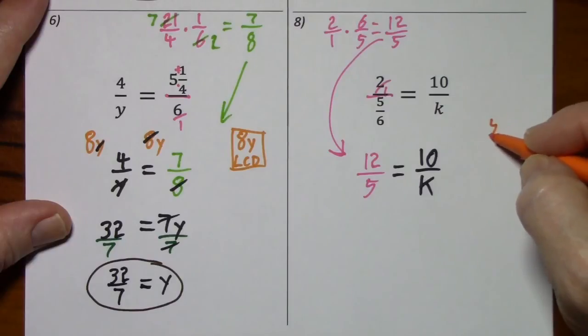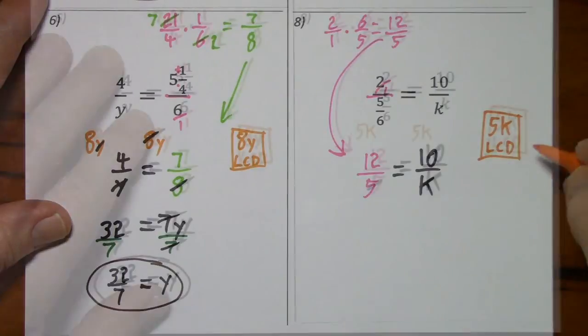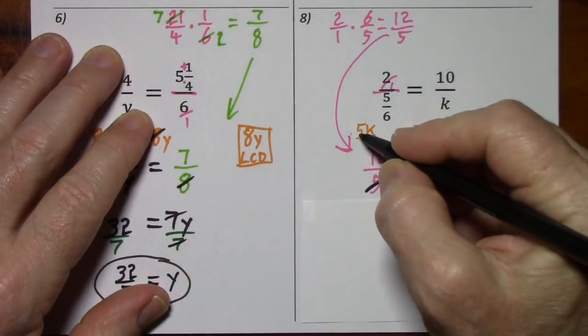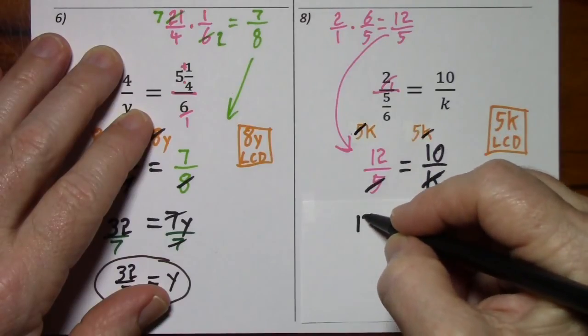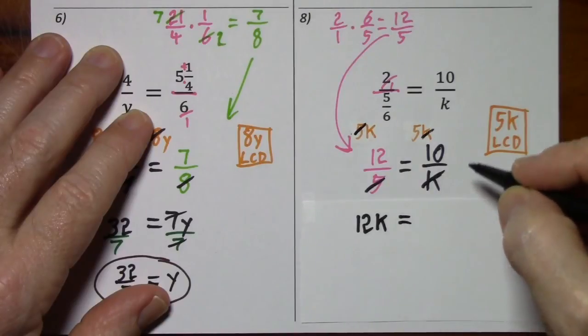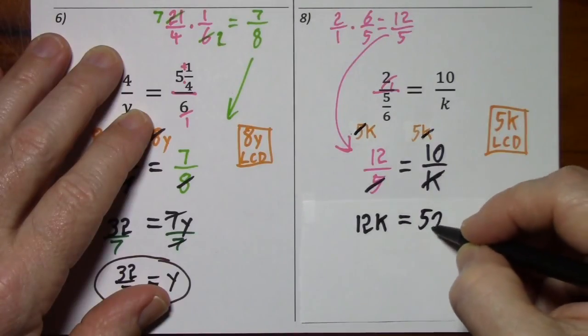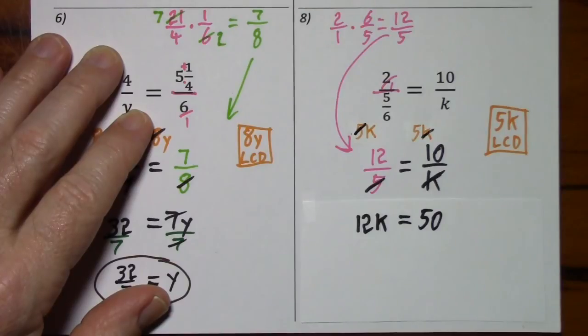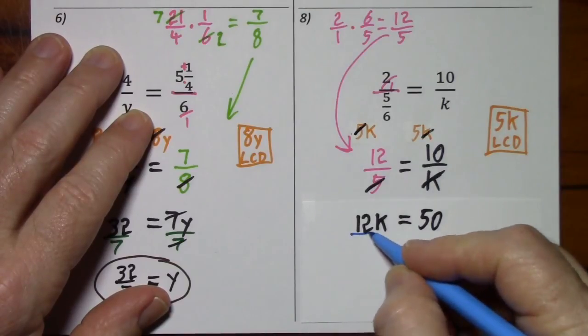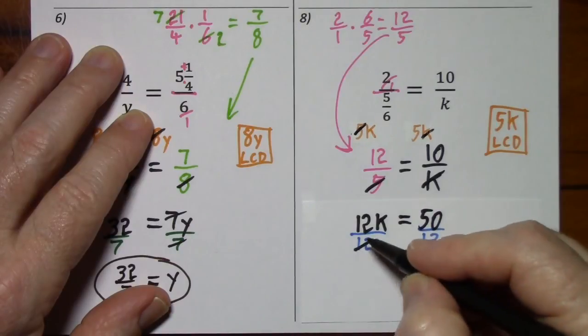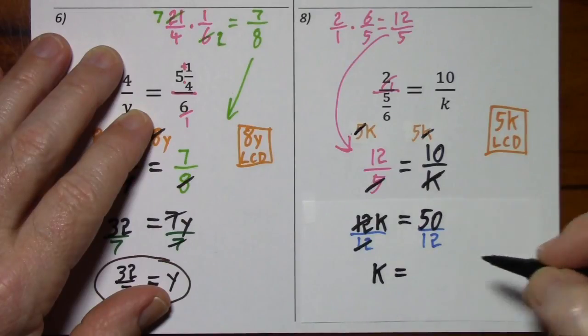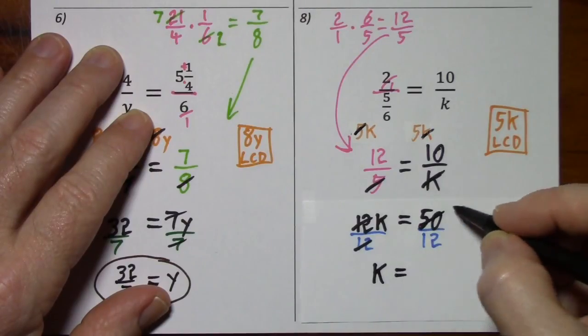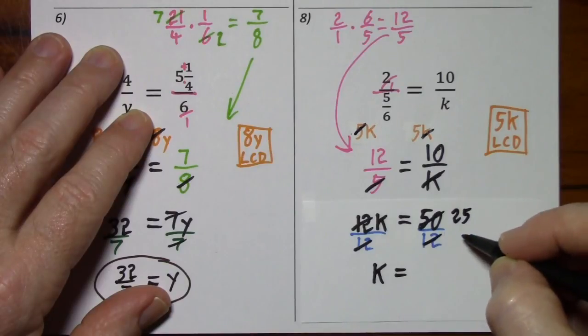The LCD is 5k. Of course the 5's cancel. The k's cancel. So you have 12k. And 5 times 10. Just got to get rid of the 12. Divide by 12. They cancel. k is equal. A common factor of 2. So you get 25 over 6.